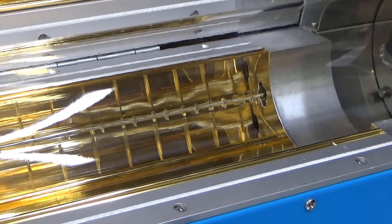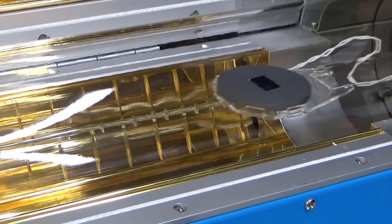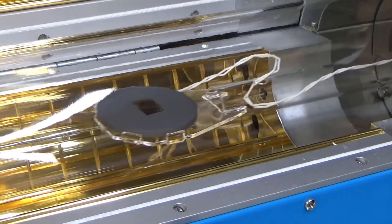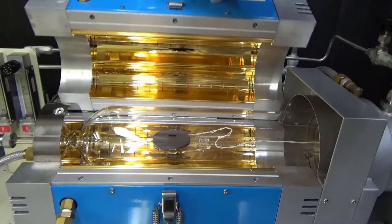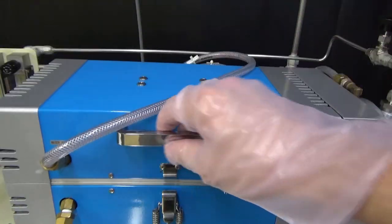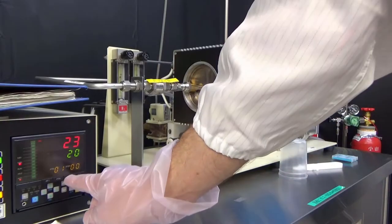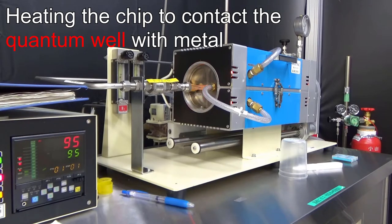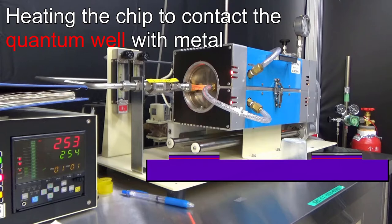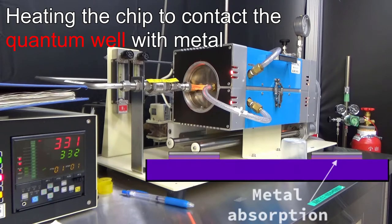However, before these electrodes can function, they must first be heated. We heat the chip to around 400 degrees Celsius in a rapid annealing furnace filled with pure hydrogen. This causes the metal to diffuse into the chip and contact the quantum well.